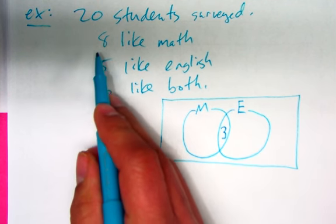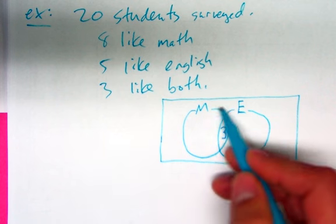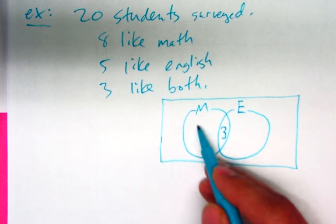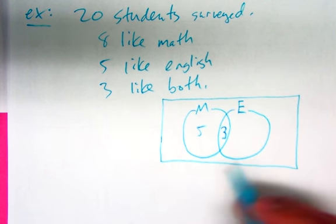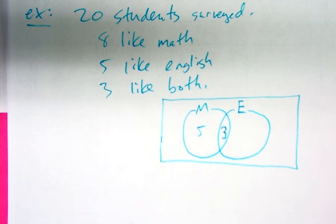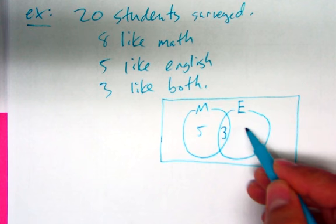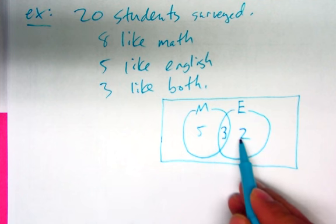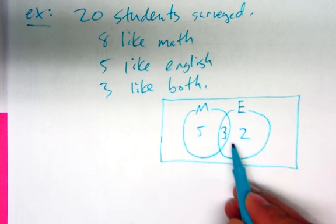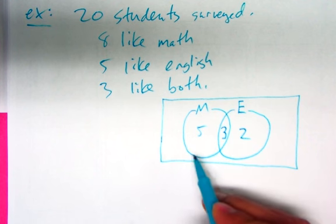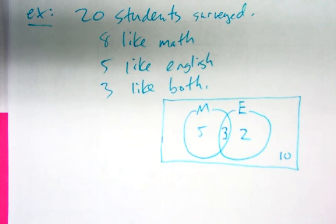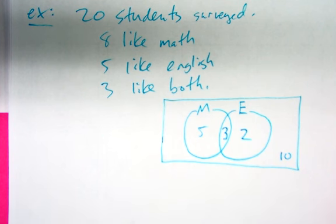If eight liked math, that means the math circle should total eight. So that means five liked math only, and three happened to like both math and English. Then two goes in the English-only section. That's five plus three plus two — only ten so far. Since 20 students were surveyed and only ten are accounted for, ten are on the outside — they don't like math or English, or at least not either of those two classes.